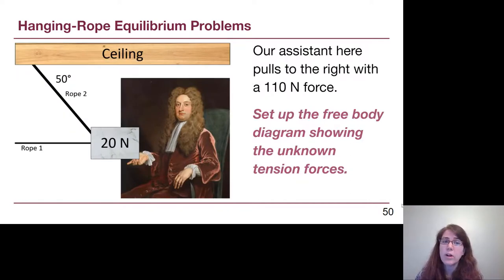I'm not going to have the whole number values out on this one, because really the key is just making sure we know what forces are acting and in what direction those forces are acting. You're certainly welcome to finish the problem on your own. Here we have our fancy assistant that is pulling to the right with a 110 newton force. So we want to set up the free body diagram showing the unknown tension in rope one and in rope two. So pause the video and try to draw that free body diagram.